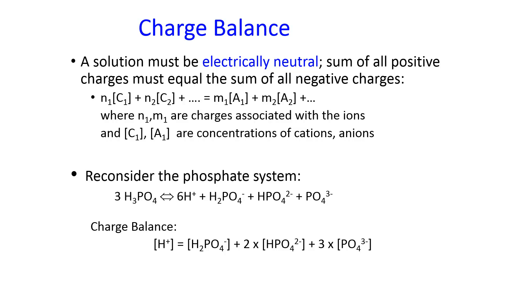Every mole of the phosphate ion contributes three moles of negative charge; every mole of protons contributes one mole of positive charge. So in order to balance, you need to have more hydrogen than you do phosphate. This is not a mass balance equation, so you should not think about it in terms of stoichiometric coefficients — think about it in terms of the amount of charge that each ion brings into the system.